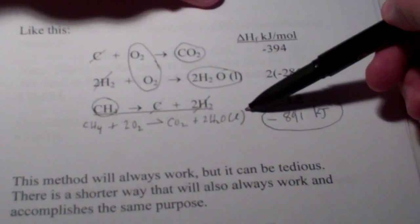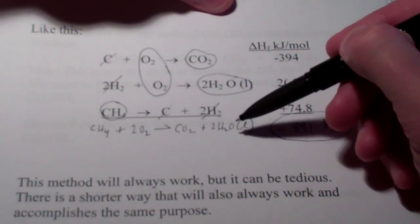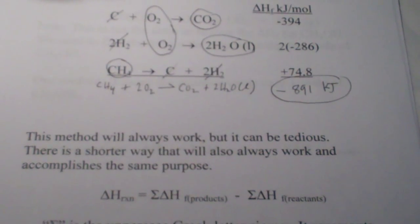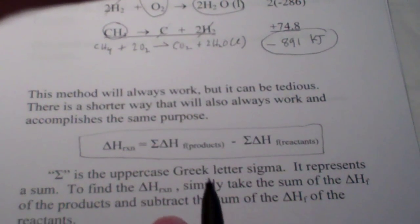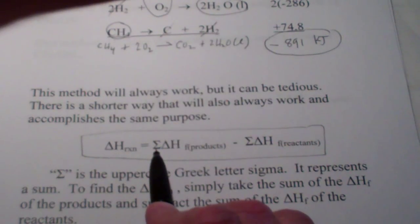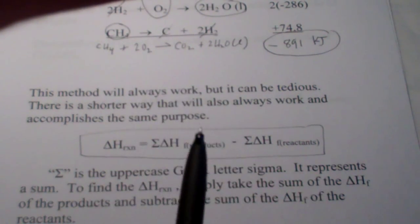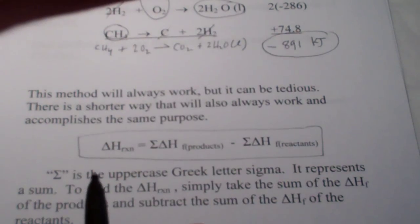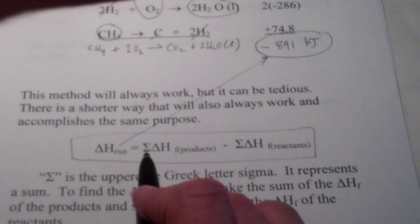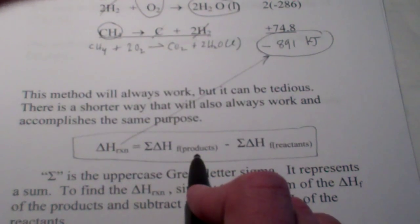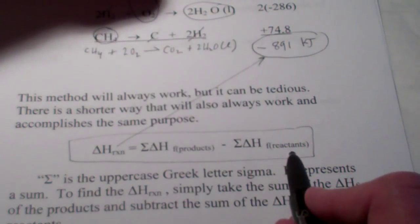This is the formal use of Hess's Law — it's pretty tedious. There's another method that will accomplish the same thing. It's this equation. The capital Greek letter sigma means 'the sum of.' So if I want to find the heat of a reaction, I take the sum of the heats of formation of my products — which I can look up in the data table — and subtract the heats of formation of my reactants.